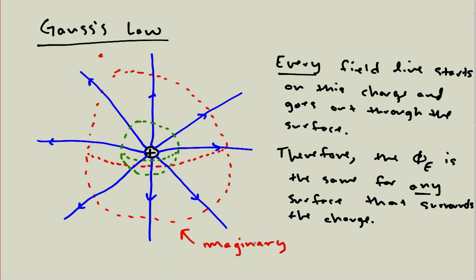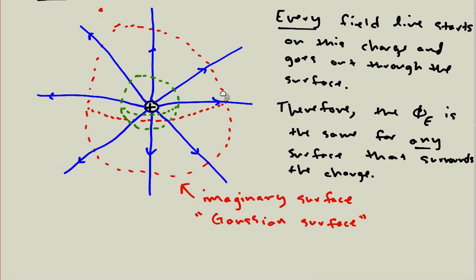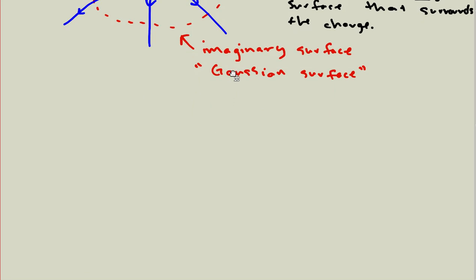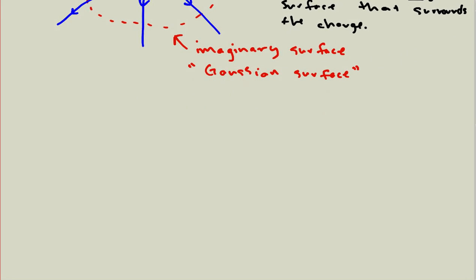Just to emphasize — there's nothing real about the surface. These surfaces I drew are totally imaginary; they're just a useful mathematical tool in order to ask questions about what's going on electrically. This is called a Gaussian surface, because it's going to be related to Gauss's Law. Whenever you see 'Gaussian surface,' that means it's not a real thing — there's not actually anything enclosing the charge, it's just a made-up surface drawn around it.